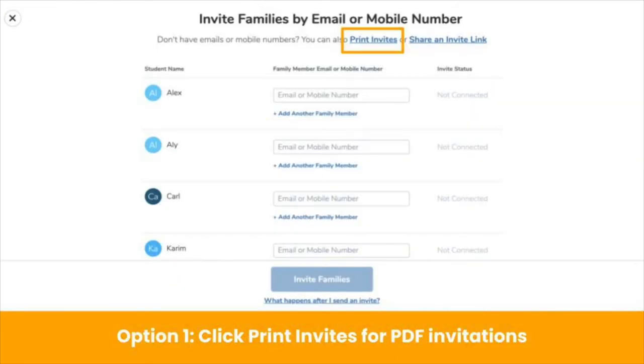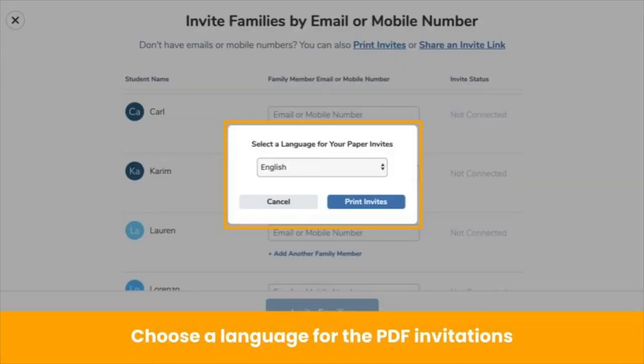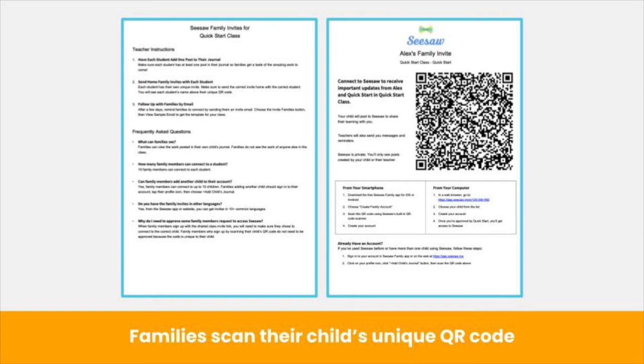Print PDF invites by clicking print invites. Printed invites are available in 15 languages. Choose a language and you get a class set of personalized PDFs for each child. Family members scan the QR code and follow the prompts to connect to their child's journal. If you need invites in more than one language, repeat the process for each language you need.